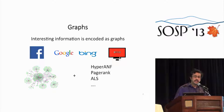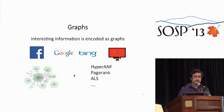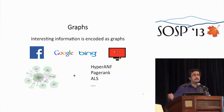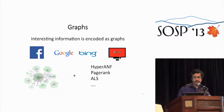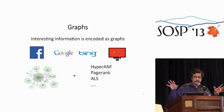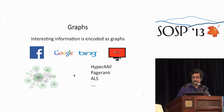What we're interested in doing is taking a large graph and running a bulk operator on it. Something like Hyper-ANF would tell you the average distance between people on a social network. Or you could run PageRank to rank pages. Or Netflix would run something like alternating least squares to discover hidden edges and thereby recommend movies to users.